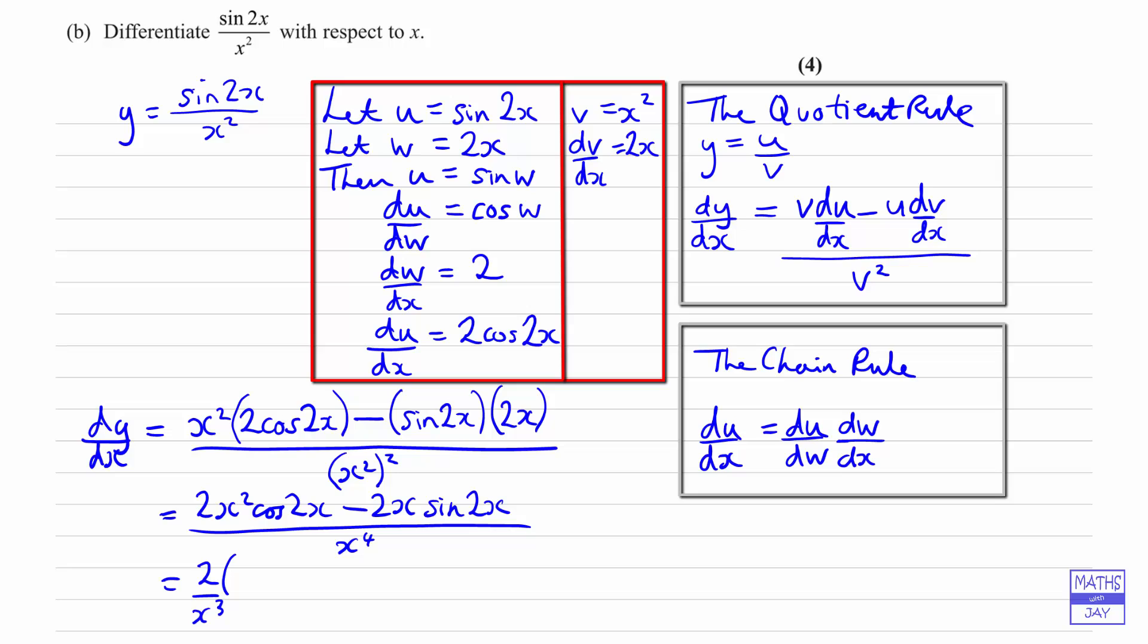And then in the numerator, instead of x squared we'll get x, so we've got x cos 2x. And then instead of 2x there, well remember we've already got the 2 outside the bracket, the x we're cancelling from everything, so all we're going to have there is sin 2x. And then that's it, we've differentiated sin 2x divided by x squared.